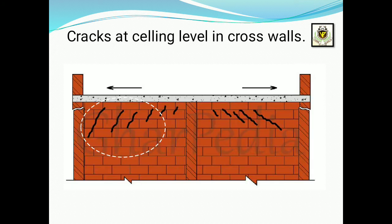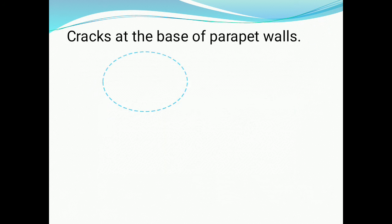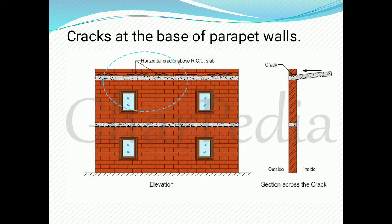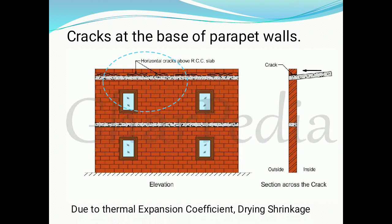First, cracks at ceiling level in cross walls. In the circular portion we see cracks at ceiling level in cross walls — the cross wall means the walls built in construction. Cracks are developed below the ceiling level or RCC slab, and these cracks are due to temperature variations. Next, cracks at the base of the parapet wall at the topmost floor — at the junction of the slab and parapet wall, horizontal cracks develop due to thermal expansion coefficient or drying shrinkage.